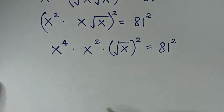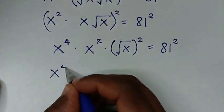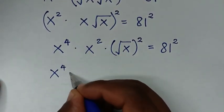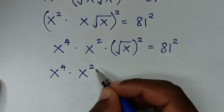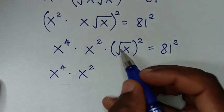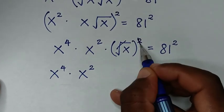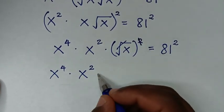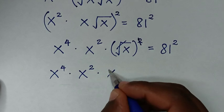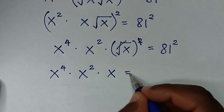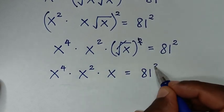In the next step it will be x to the power of 4, then times x squared. This square root will cancel with this square, so it will be times x, equal to 81 squared.